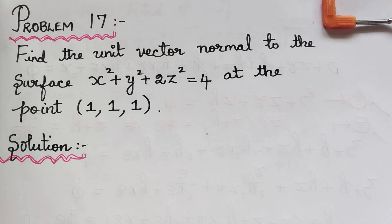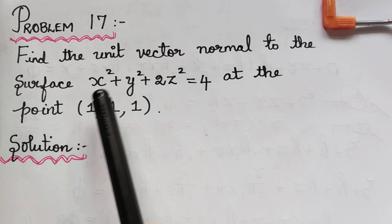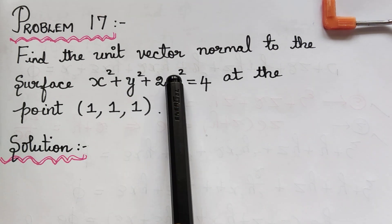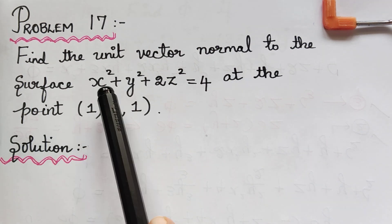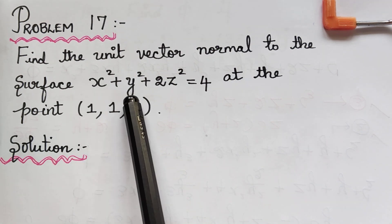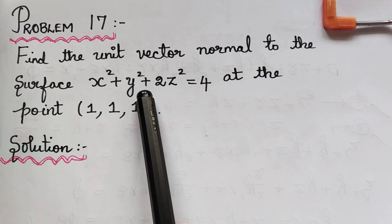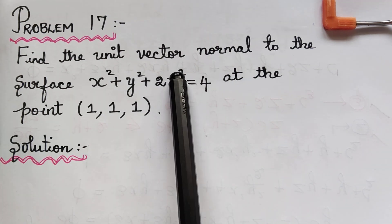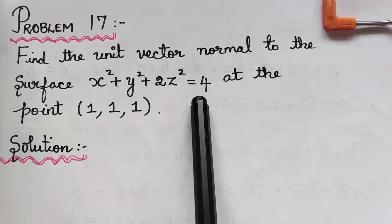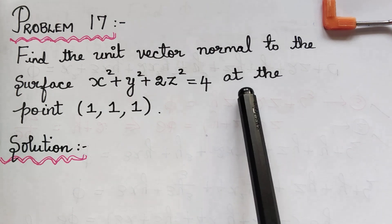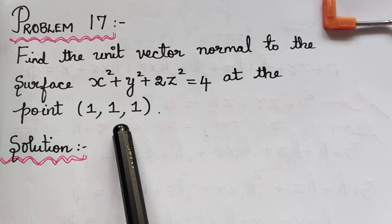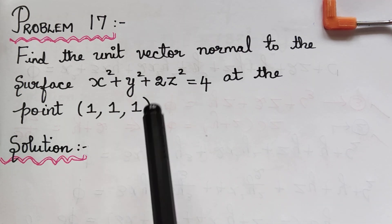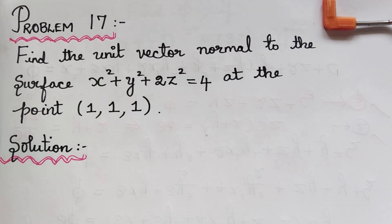We have to find the unit vector normal to the surface x² + y² + 2z² = 4 at the point (1, 1, 1).